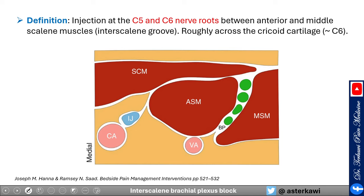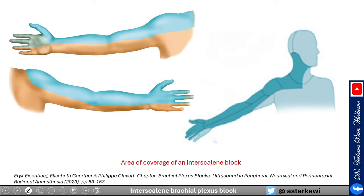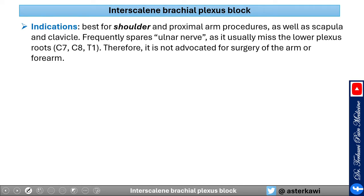The interscalene groove is where we deliver the medication. The coverage area includes part of the neck and arm, but it consistently misses the inferior trunk. This makes it best for shoulder and proximal arm procedures, as well as scapula and clavicle. It frequently spares the ulnar nerve, usually misses the lower plexus roots, and is therefore not advocated for arm or forearm procedures unless supplemented with additional blocks.